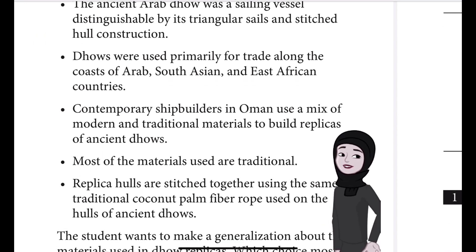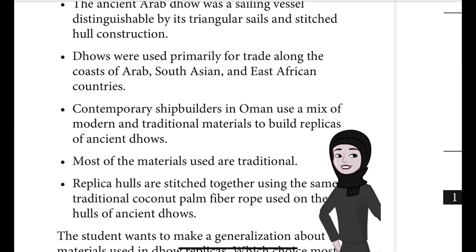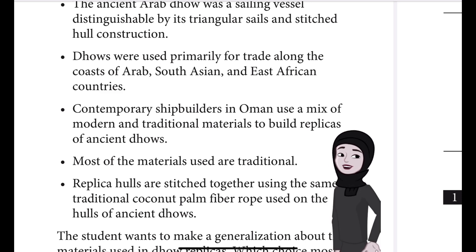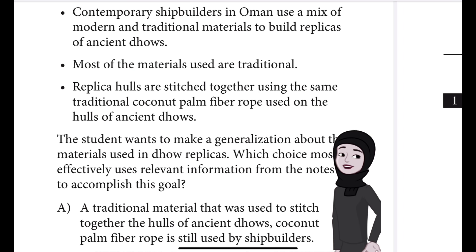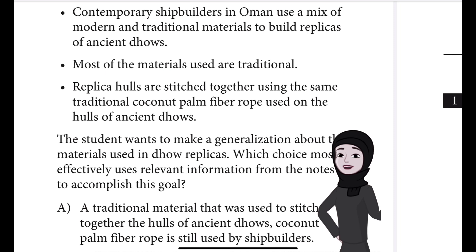Contemporary shipbuilders in Oman use a mix of modern and traditional materials to build replicas of ancient Dhaws. Most of the materials used are traditional. Replica hulls are stitched together using the same traditional coconut palm fibre rope used on the hulls of ancient Dhaws.